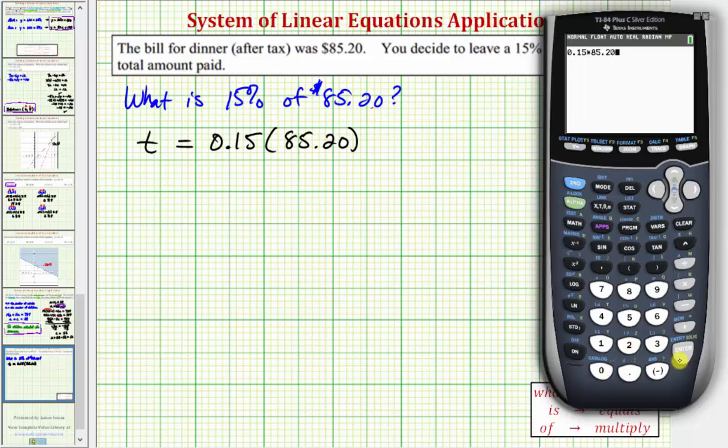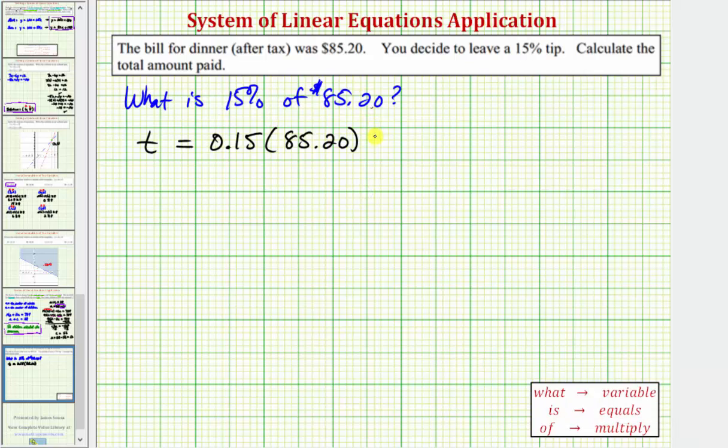if we want 0.20, is equal to 12.78. So this tells us that the tip amount is 12 dollars and 78 cents.